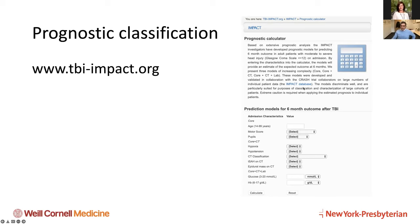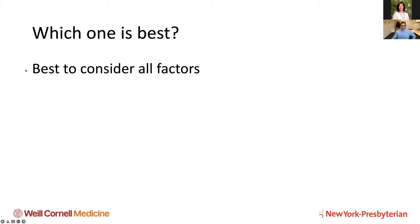Which classification is best? Trick question — you should consider all of them. Usually things will be consistent: bad mechanism, Marshall three or four on CT, GCS of five — all consistent with severe TBI. Sometimes there's discordance: the scan looks really bad but the patient looks great, or vice versa. When the patient looks bad and the scan doesn't look bad, you want to think: what am I missing? Is the patient seizing? Is there a toxic component? Consider all factors together.